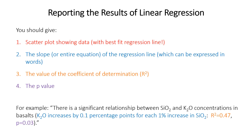When reporting the results of linear regression, you might include a scatter plot showing the data and the best fit regression line. It's helpful to describe the relationship in words or give the numerical coefficient for the effect of the independent variable. You should definitely give an R-squared value to show how strong the relationship is, and the p-value if you're doing hypothesis testing.